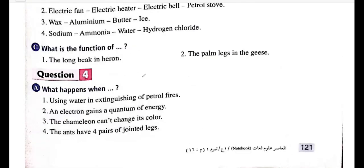What happens when using water to extinguish a petrol fire? The density of petrol is less than the density of water, so petrol will float on the surface of the water and the fire will not be put out.